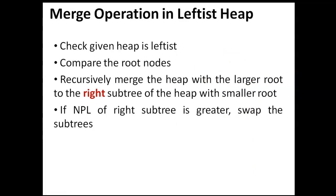How do we do merge operations in the leftist heap? First, we need to check whether the given heap is a leftist heap. Then, before merging, we compare the root nodes of two heaps. We repeatedly merge the heap with the larger root into the right subtree of the heap with the smaller root. If the NPL of the right subtree is greater, then we swap the trees.